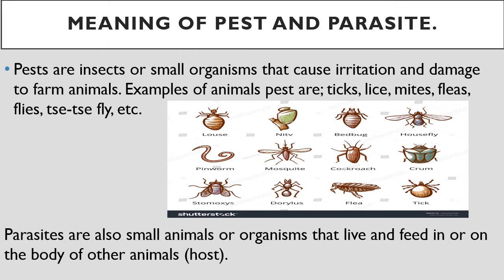Meaning of pests and parasites: Pests are insects or small organisms that cause irritation and damage to farm animals. Examples of pests are wasps, ticks, lice, mites, fleas, flies, tsetse fly, and others.